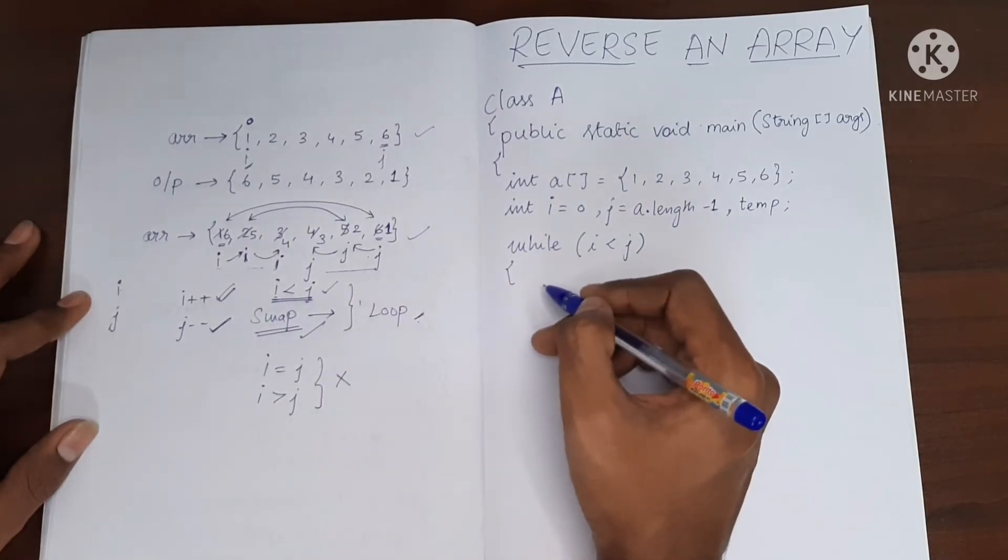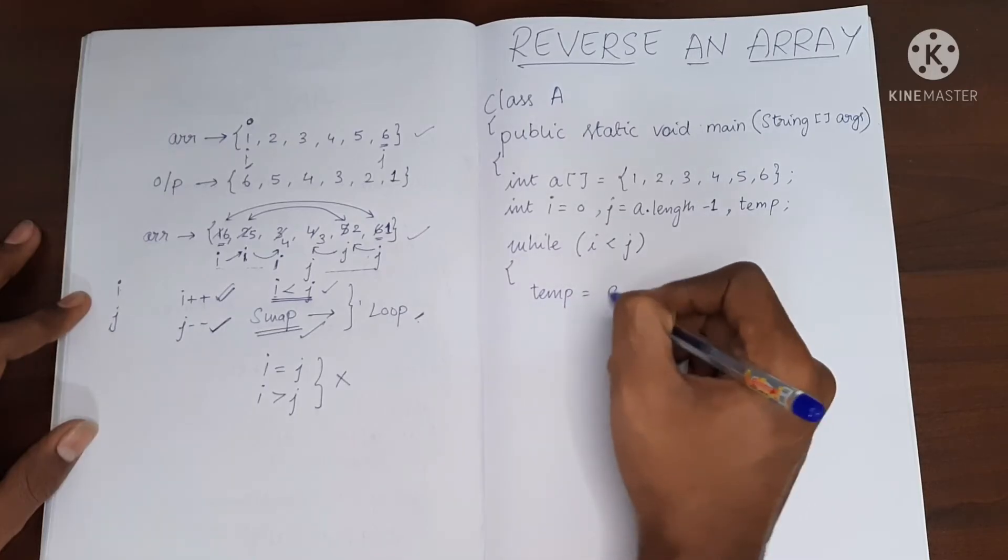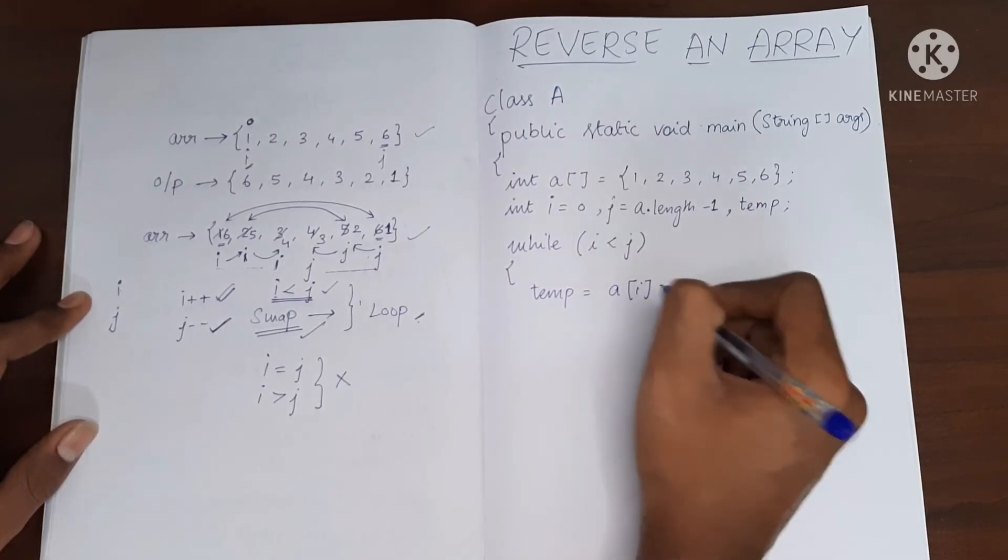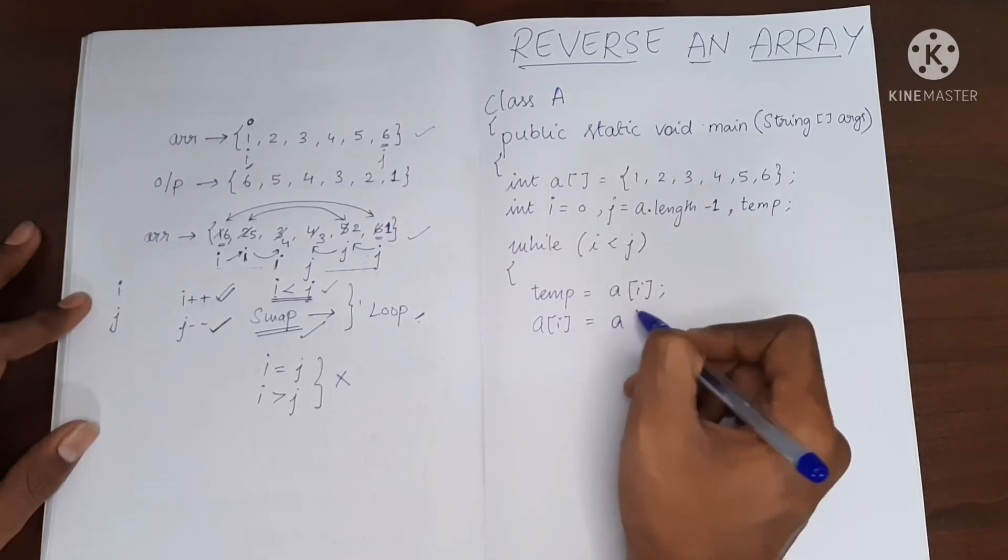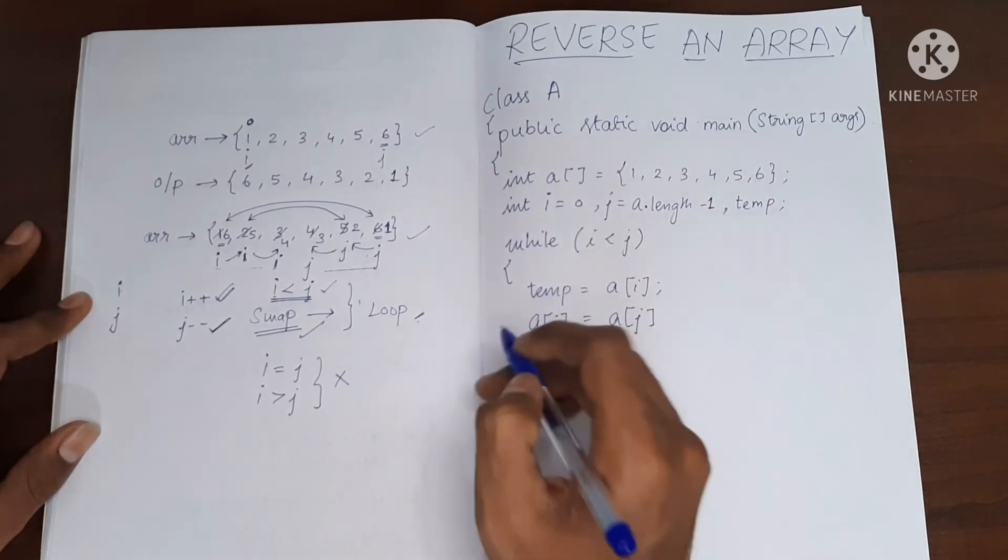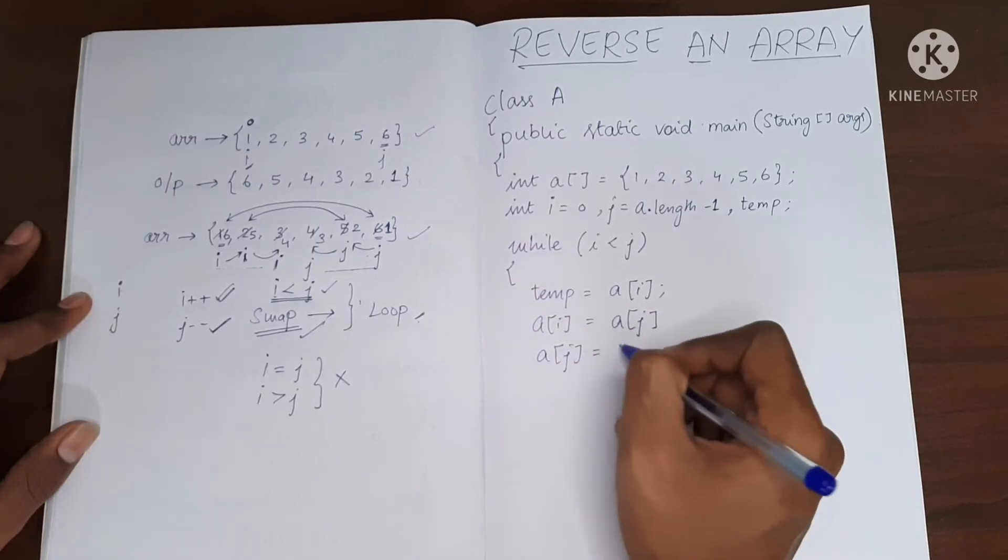So I hope you know how to swap two values. So it will be temp. I am going to store a of i in temp, now a of i will be a of j, a of j will be temp.